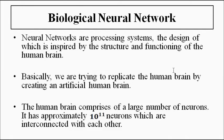Neural networks are processing systems used to process data and information. The design of neural networks is inspired by the structure and functioning of the human brain. The word itself — neurons — the main functional and structural unit of the human brain, is found in this 'neural' part. Basically, what we are trying to do with the artificial neural network is to replicate the functions of the human brain — to create an artificial human brain. This is where artificial intelligence comes into play, and neural networks are an important component of it.